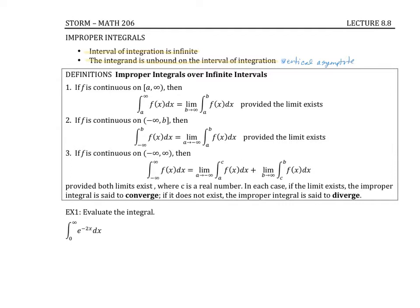In the first example, the upper limit of integration is infinity. Since we can't plug in infinity, the strategy is to replace infinity with a constant — typically b, since that's what we use for an upper limit — then evaluate the integral with b, and take the limit as b goes to infinity.